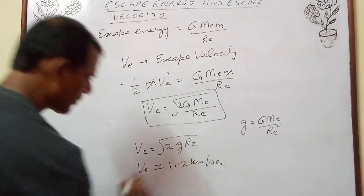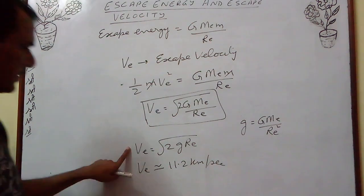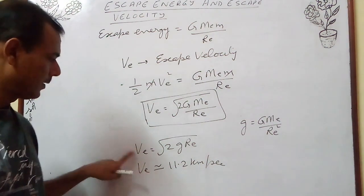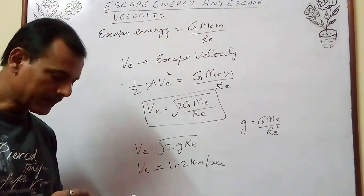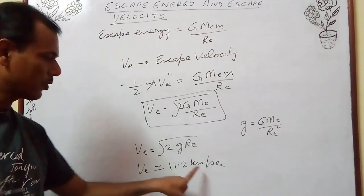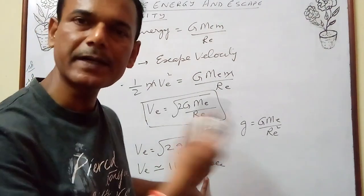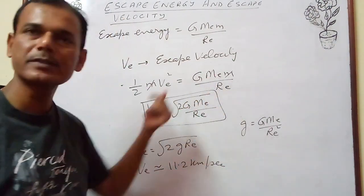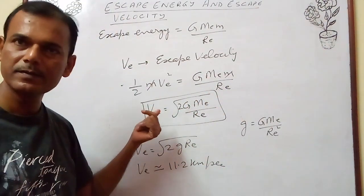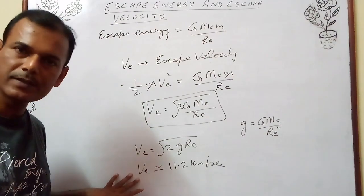This is the approximate value of escape velocity. If an object is given a velocity of 11.2 km per second, it will escape to infinity — meaning it will not return back to the surface of earth. So this velocity is called escape velocity.